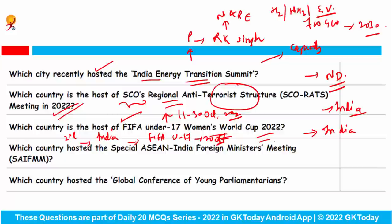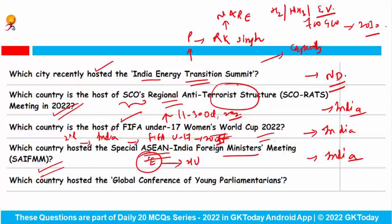Which country hosted the Special ASEAN-India Foreign Ministers' Meeting? It was also hosted by India. ASEAN stands for the Association of Southeast Asian Nations. Which country hosted the Global Conference of Young Parliamentarians? The answer is Egypt.